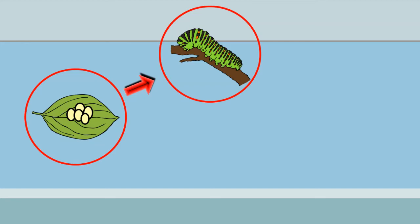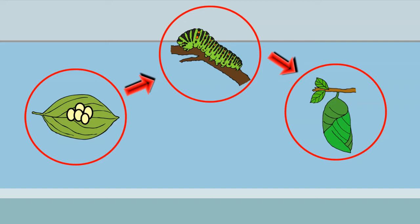These tiny eggs hatch into a larva or a caterpillar. We often see caterpillars crawling around and eating. After the caterpillar is bigger, it attaches itself to a twig and forms a hard outer shell.